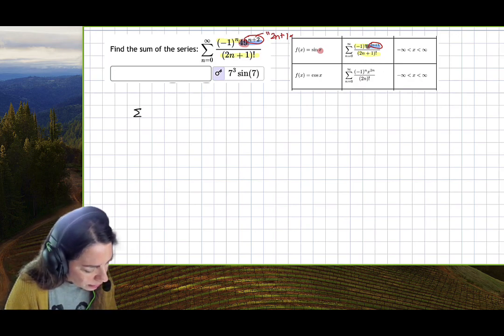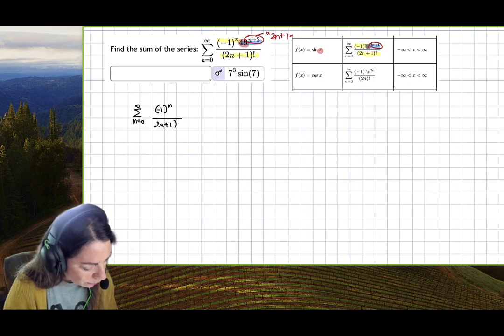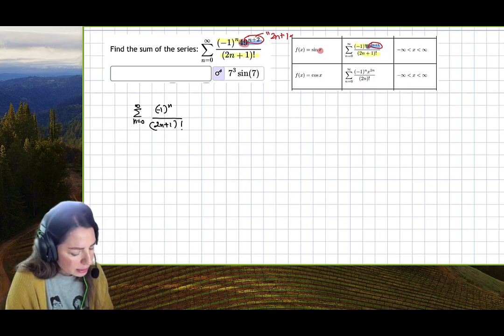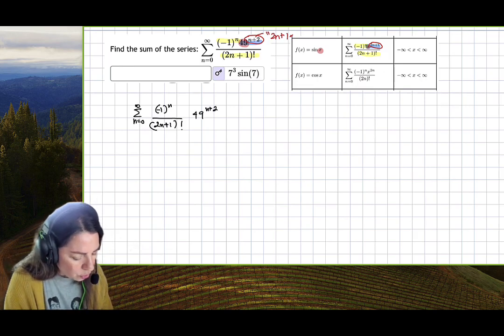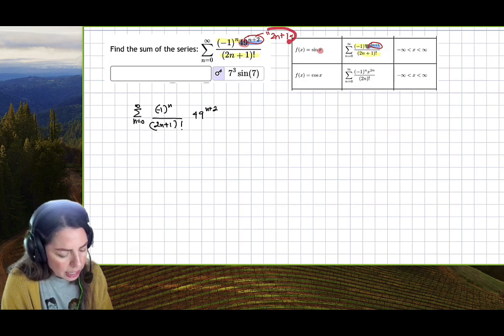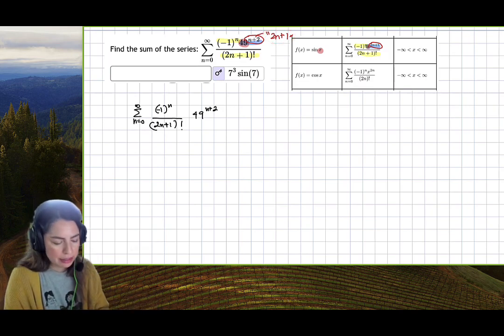I'll take n equals 0 to infinity, negative 1 to the n, and put this over 2n plus 1 factorial because that's going to stick. It's the 49 to the n plus 2, and my goal is to get the exponent to be 2n plus 1 because whatever that base ends up being, I can plug it in for x.